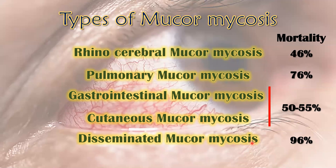Disseminated mucormycosis carries a 90 percent mortality rate — out of 100 patients, about 90 may die. Pulmonary and rhinocerebral mucormycosis also have very high mortality rates compared to COVID-19 mortality. This is why, in the second wave of COVID-19, death rates are higher — people are not dying only from COVID, but also from secondary infections, among which mucormycosis is emerging as a severe and concerning fungal infection.